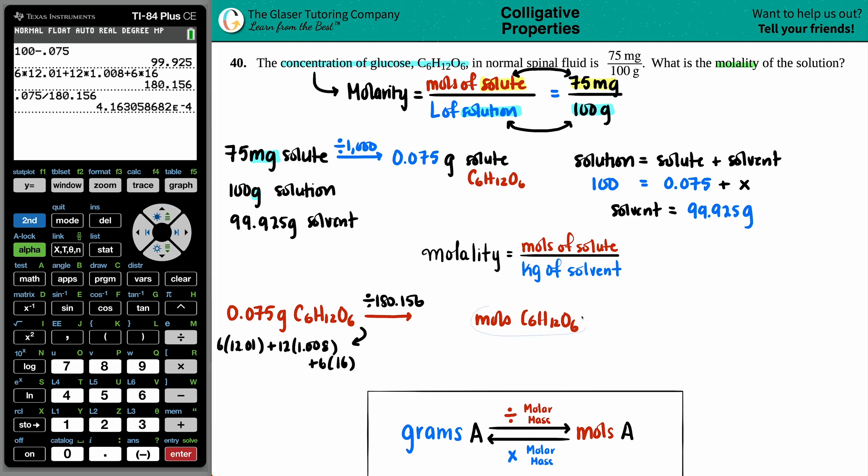and I get a pretty small number, scientific notation, 4.163 times 10 to the negative fourth moles.